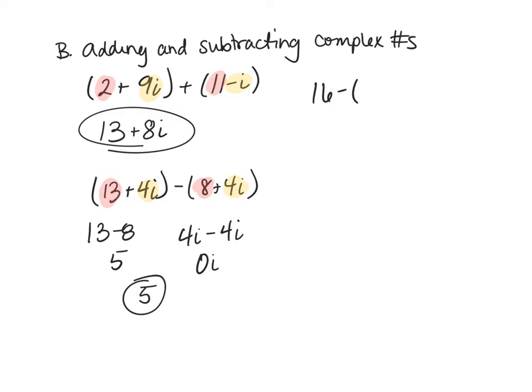And how about 16 minus 13 plus 6i plus 8i. Well now I have a negative in front of that parentheses, so I'm subtracting that whole thing. So I'm going to distribute that negative and make it minus 13 minus 6i plus the 8i. And now I can combine my real: 16 minus 13 is 3.